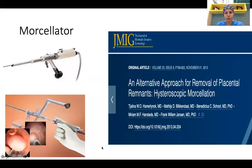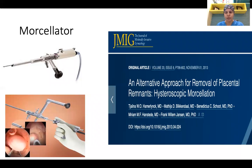Another approach is using a hysteroscopic morcellator. We have the TrueClear system and the Bigatti shaver. It all depends on the expertise and availability of equipment. The hysteroscopic morcellator, which is used for polyps and fibroids, can also be used for retained product of conception. The advantages are a less steep learning curve and ease of procedure, though availability of equipment and expertise is required.